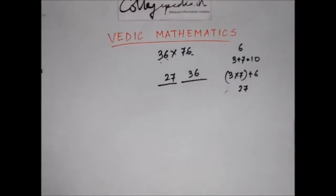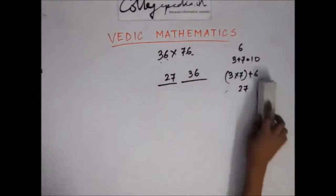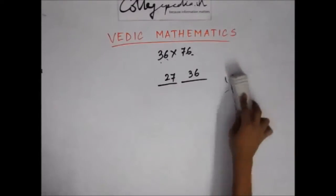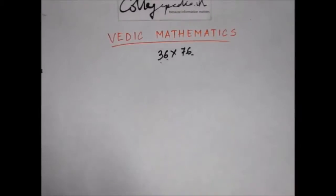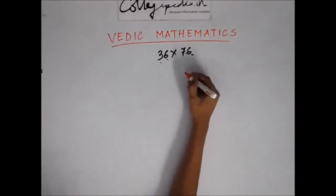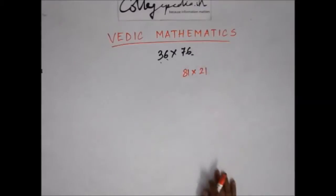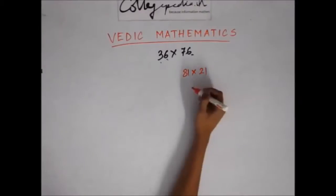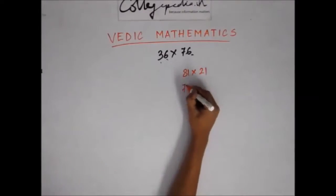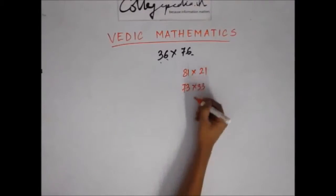So that's the trick — we can quickly find the product of two numbers whose first digits add up to 10 and the last digit is common. We're saving around 15 seconds of precious time. For practice, try these: 81 × 21, 73 × 33, and 99 × 19 — all of the same type where the last digit is common and the first digits add up to 10.